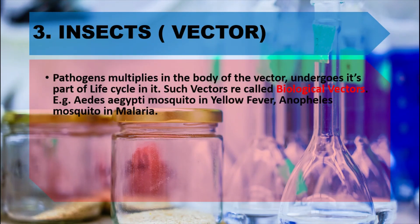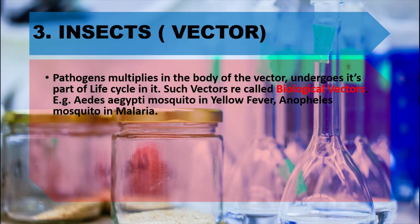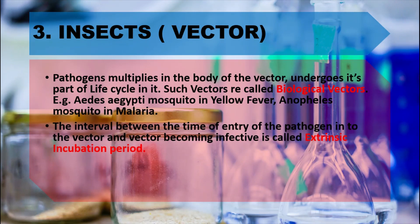The biological vector is one in which the pathogen multiplies in the body of the vector and undergoes part of its life cycle within it. For example, the Aedes aegypti mosquito transmits yellow fever. The well-known example is the female Anopheles mosquito, which transmits malaria. When the mosquito sucks blood from an infected person, it carries the malarial parasite, which undergoes part of its life cycle in the mosquito, after which the mosquito becomes infective and transmits the parasite to a new human host.